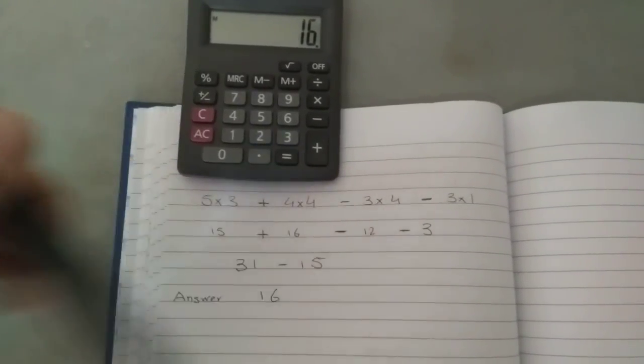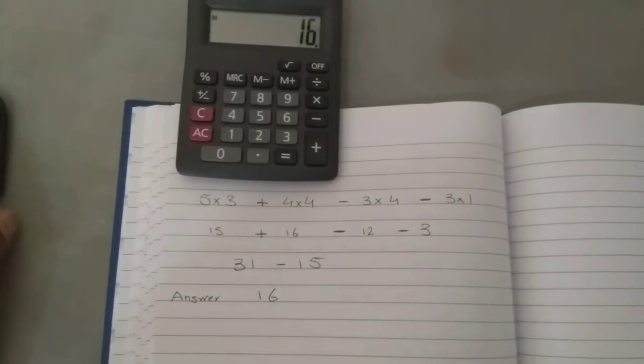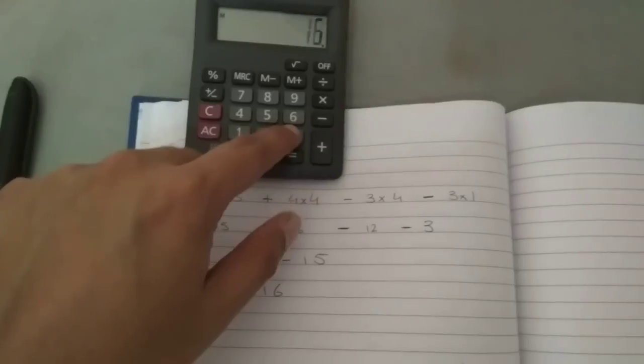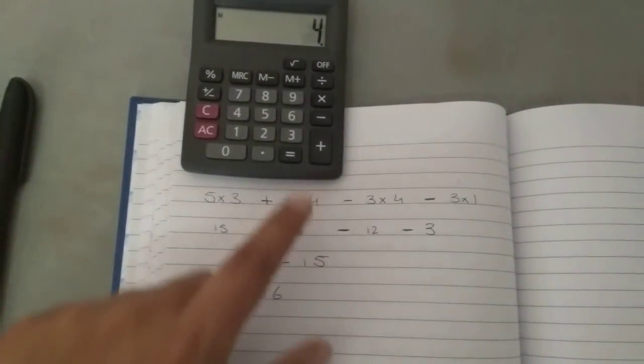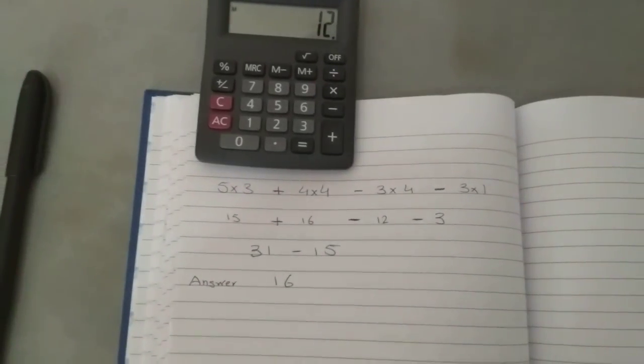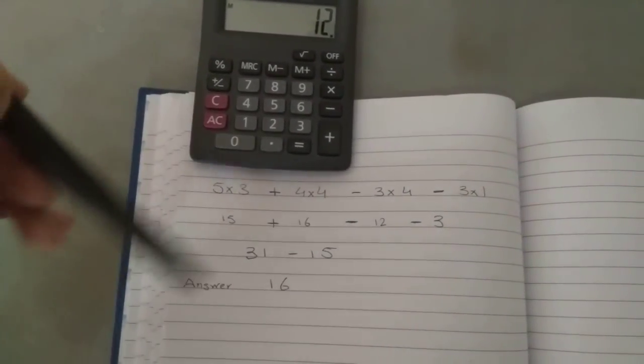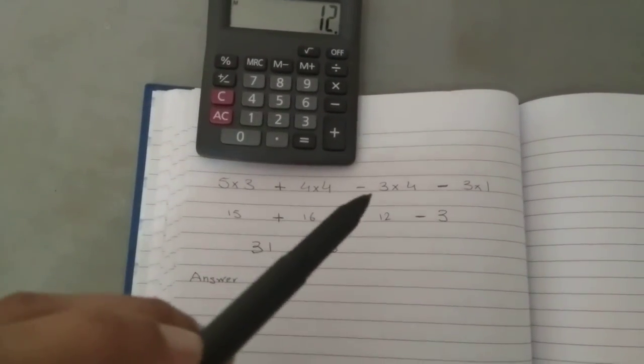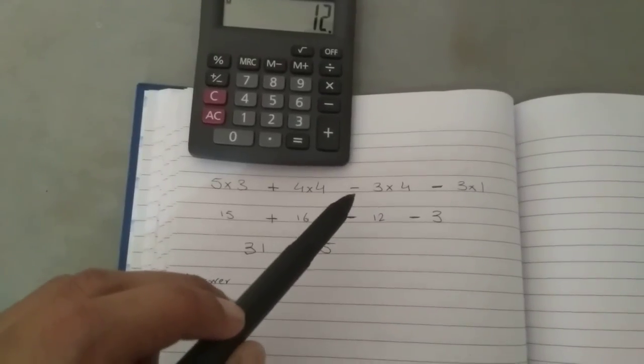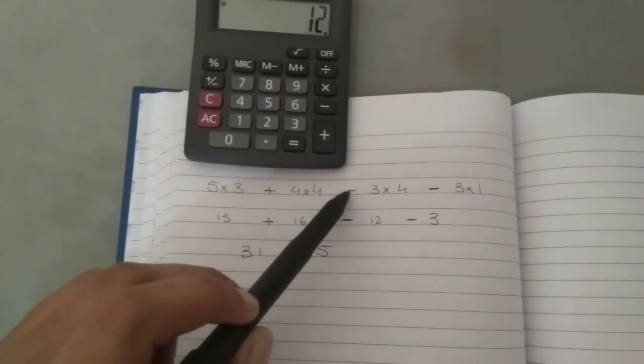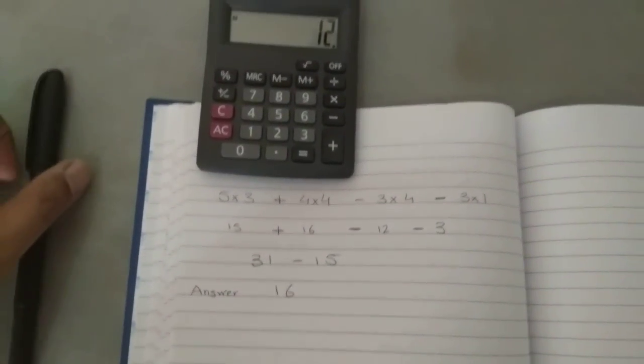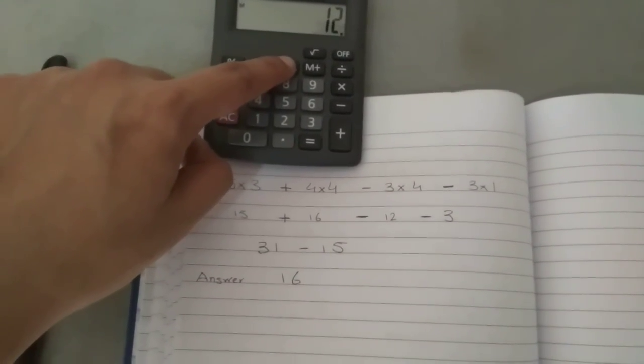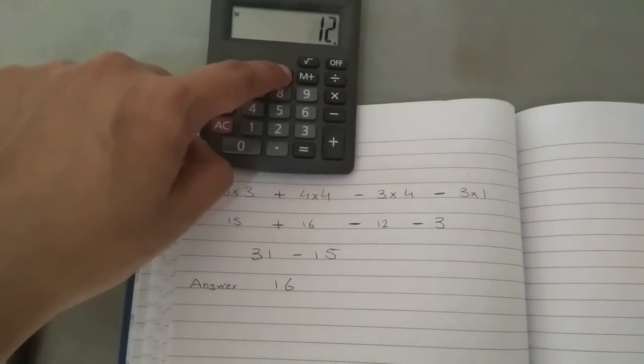Now I move ahead to the next equation. As you see, 3 multiply by 4 equals 12. But there's one big thing that you have to remember: as you see here, there's a minus sign. So what I'm going to do is save this amount into M minus because there was a minus sign.